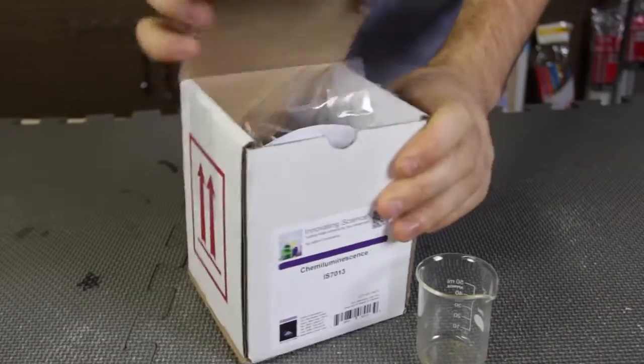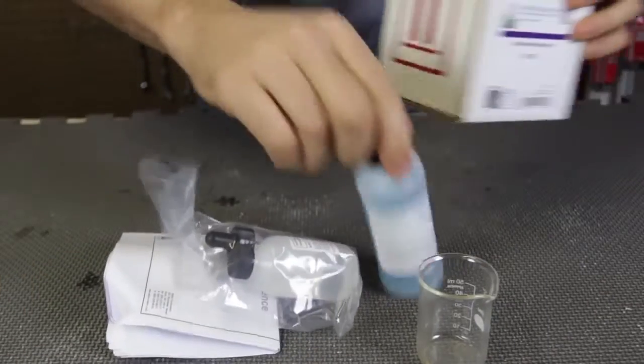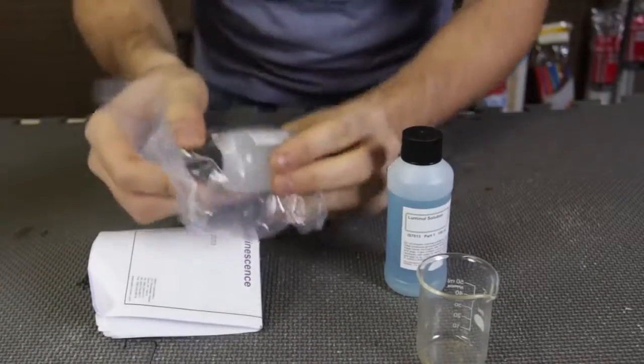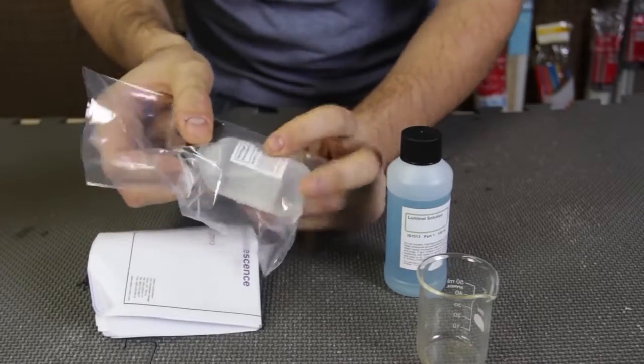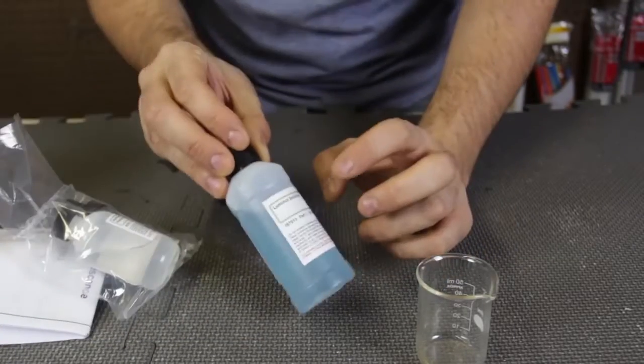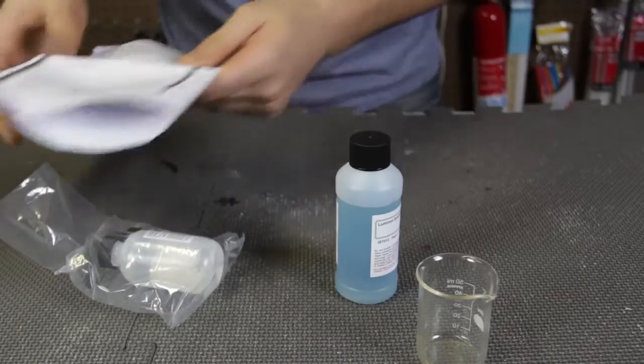Let's check this out. Okay, let's open it up and see what's inside of it. Boom, looks like this is hydrogen peroxide 6% and this is luminol solution.